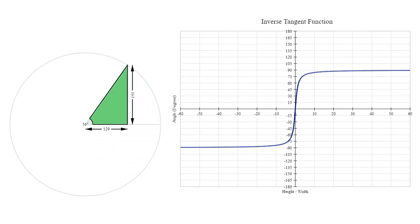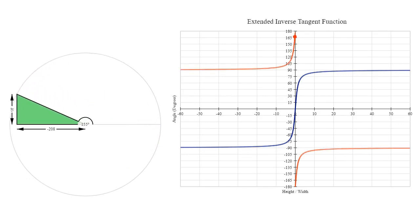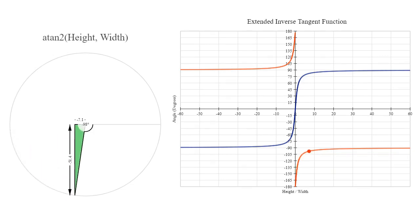In most modern programming languages, this is taken care of for us, by using the extended inverse tangent function, or as it is usually referred to, the atan2 function.